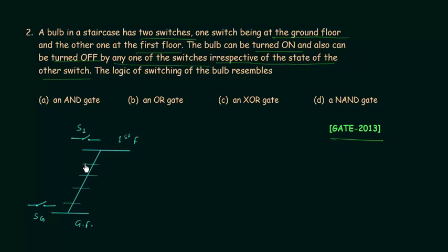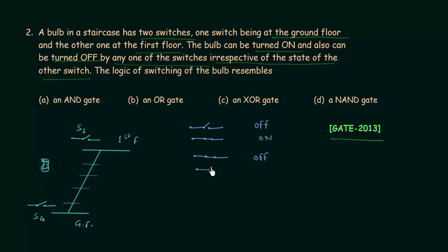Let me explain what is happening here. If a switch is open and the bulb is off, when you close the switch the bulb will turn on. In another condition, when the switch is closed and the bulb is off, when you open the switch the bulb will turn on. The bulb can be turned on and turned off by any one of the switches irrespective of the state of the other switch, so we don't need to consider the position of the other switch.